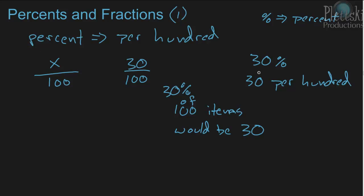Thirty percent would be the same thing as thirty over a hundred. If you wanted thirty-seven percent, to write that as a fraction would be thirty-seven over one hundred.